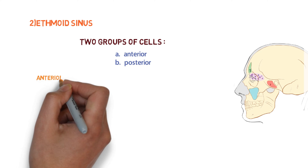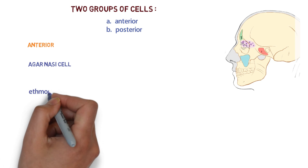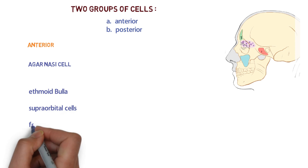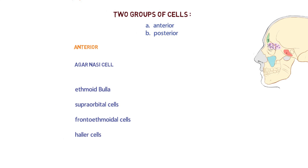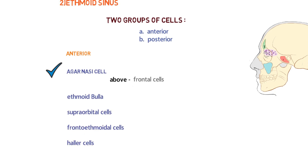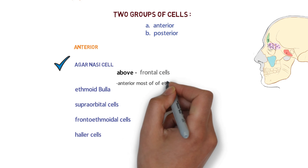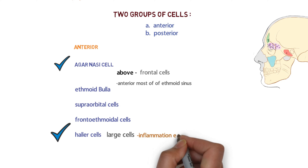The anterior ethmoid sinus contains different types of cells: agger nasi cells, ethmoid bulla, supraorbital cells, frontal ethmoid cells, and Haller cells. The agger nasi cells are the anterior-most cells of the ethmoid sinus, present at the agger nasi ridge, with frontal cells located above them. The Haller cells are large cells — if any inflammation occurs in these large cells, there is easy blockage of the drainage pathway.